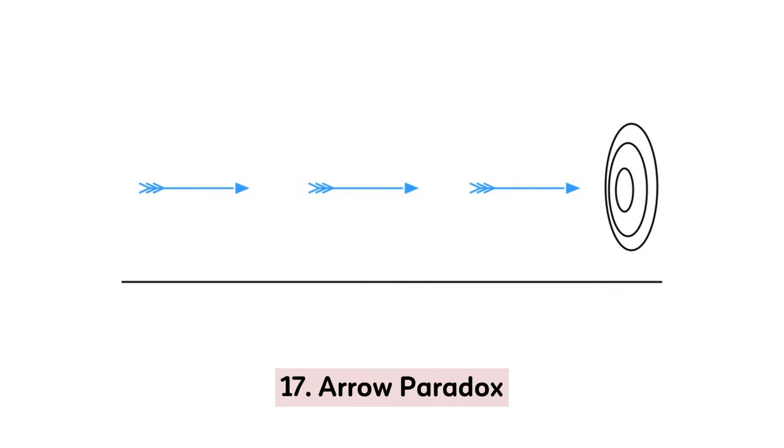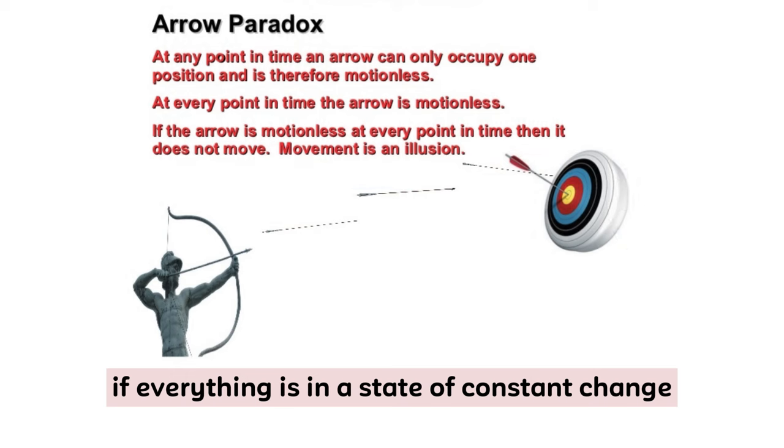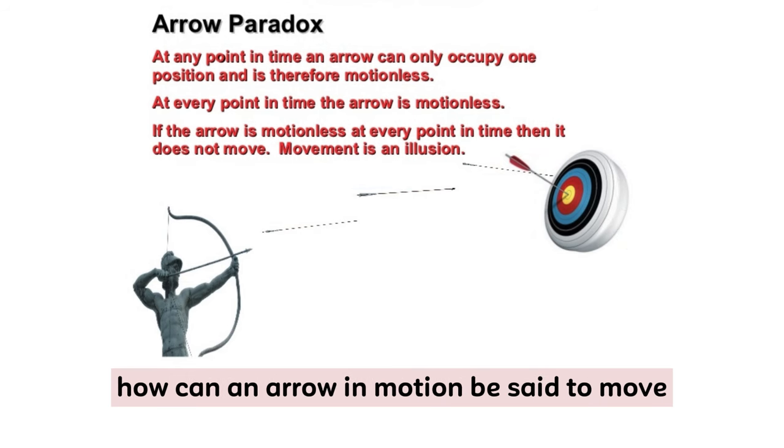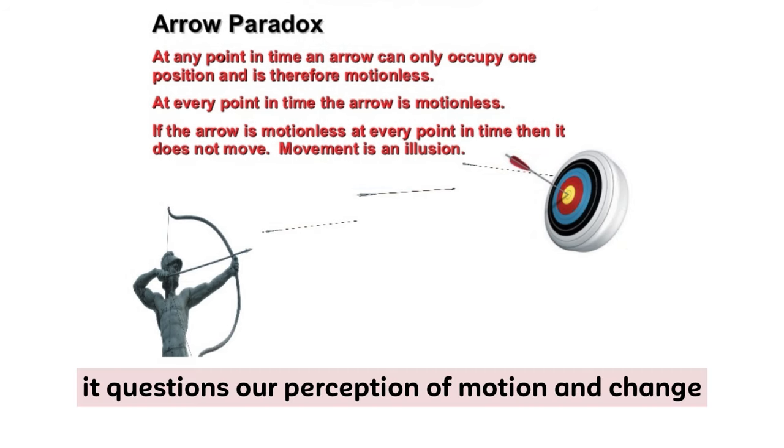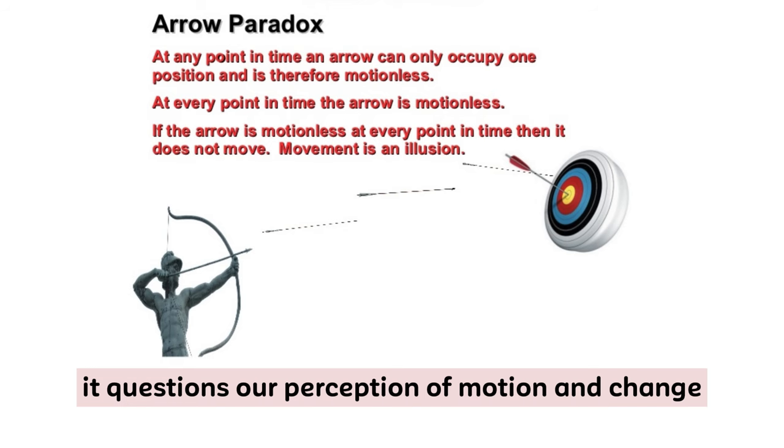17. Arrow Paradox. If everything is in a state of constant change, how can an arrow in motion be said to move? It questions our perception of motion and change.